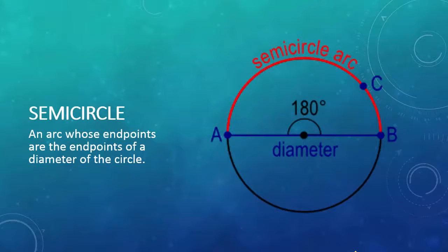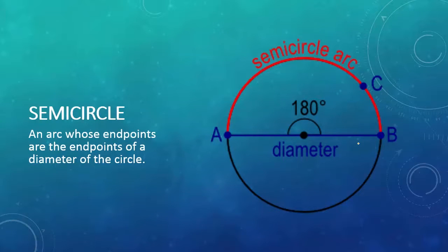Semi-circle: an arc whose endpoints are the endpoints of a diameter of a circle. In this case, we have a semi-circle, so it's half of a circle basically. The angle measure of it would be 180 degrees, and it is cut by the diameter of the circle.